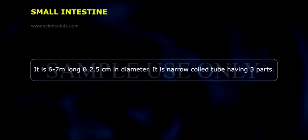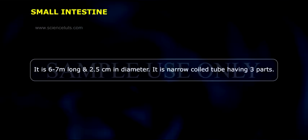Small Intestine. It is 6 to 7 metres long and 2.5 centimetres in diameter. It is a narrow coiled tube having three parts.